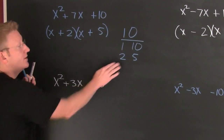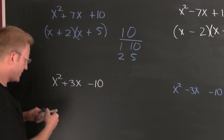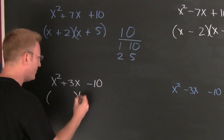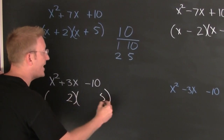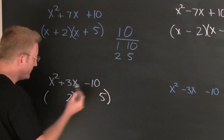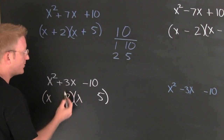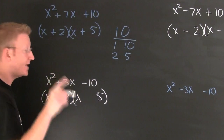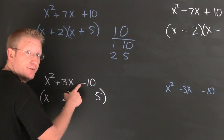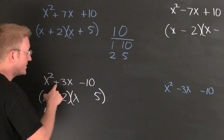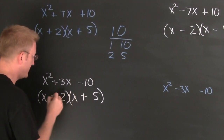Factors of 10 that subtract to be 3: 2 and 5. So we place them with X and X. Here's how the signs go — the signs are different and the big one is positive. Plus, minus.